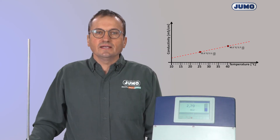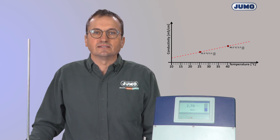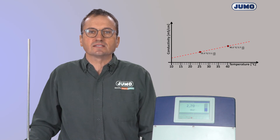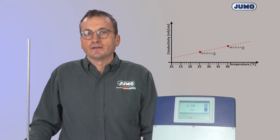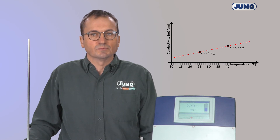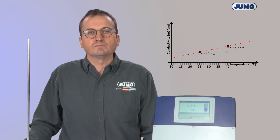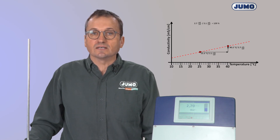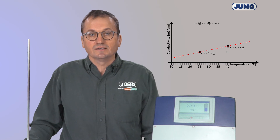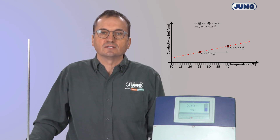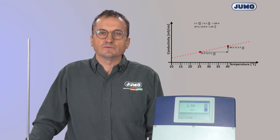The working temperature is 40.2 centigrades and the transmitter shows an uncompensated conductivity of 2.7 mS per centimeter. With these two pairs of values, I determine the slope of the temperature behavior of the process solution. The conductivity changes over the temperature range from 2.1 to 2.7 mS per centimeter — that's an increase of about 29 percent. Based on 1 Kelvin, the change in conductivity is about 1.95 percent. This is the temperature coefficient.